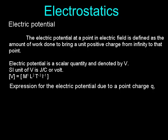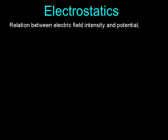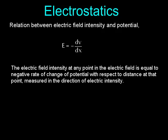Expression for the electric potential due to a point charge q: V = (1 / 4πε₀) × (Q / R). The relation between electric field intensity and potential: E = −dV/dx. The electric field intensity at any point equals the negative rate of change of potential with respect to distance, measured in the direction of electric intensity.